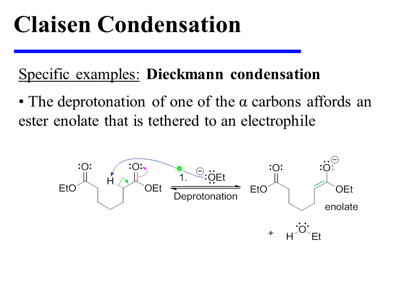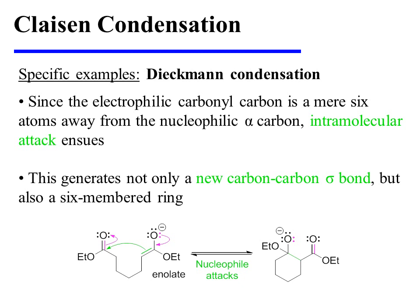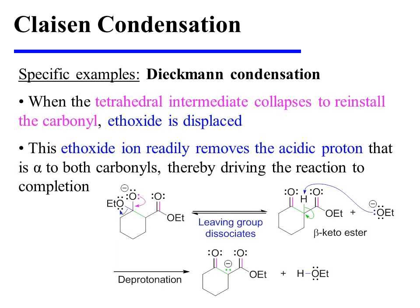The reaction begins with the deprotonation of one of the alpha carbons, which affords an ester enolate tethered to an electrophile. Since the electrophilic carbonyl carbon is a mere six atoms away from the nucleophilic alpha carbon, intramolecular attack ensues. This generates not only a new carbon-carbon sigma bond, but also a six-membered ring. When the tetrahedral intermediate collapses to reinstall the carbonyl, ethoxide is displaced. This displaced ethoxide ion readily removes the acidic proton alpha to both carbonyls, thereby driving the reaction to completion.